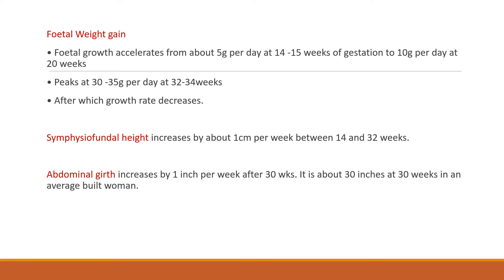Fetal weight gain accelerates from about 5 grams per day at 14 to 15 weeks to 10 grams per day at around 20 weeks. The peak occurs around 30 to 34 weeks at a rate of 30 to 35 grams per day, after which the growth rate decreases. The symphysio-fundal height increases by about 1 cm per week between 14 to 32 weeks. Abdominal girth increases by 1 inch per week after 30 weeks, being about 30 inches at 30 weeks in an average-built woman.